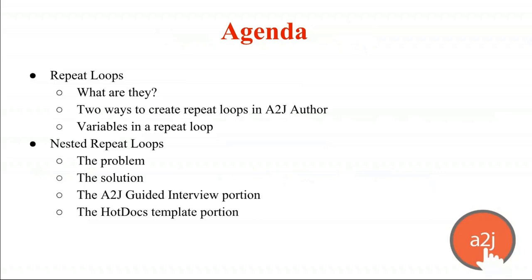Our agenda is pretty packed today — more intensive than a standard A to J Author new user webinar. We're going to cover two major topics: first, repeat loops — what they are, two ways to create them, and how variables work within a loop. Second, nested repeat loops, which is the most advanced topic in A to J. We'll cover what the problem is, the solution, and the two components: the A to J Guided Interview portion and the HotDocs template portion. If you have questions, feel free to raise your hand or put them in the question box.